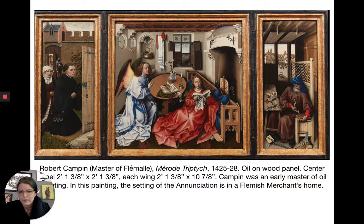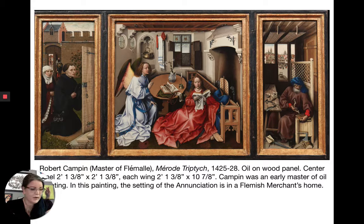Both tempera and oil can be used on a variety of surfaces. Later, linen canvas becomes primary, but at this time it's still wood panel. Italian painters used poplar; Northern painters used oak, beech, chestnut, or whatever was locally available.